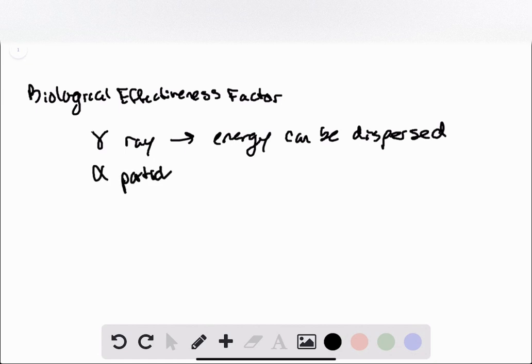If we contrast that to an alpha particle, generally the energy from an alpha particle will be used quickly. What that means is that the alpha particle is a little bit more like a sledgehammer. It goes in, its energy immediately gets dispersed, and it causes immediate damage to the tissues nearby.